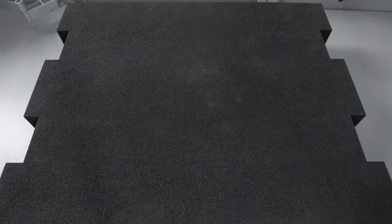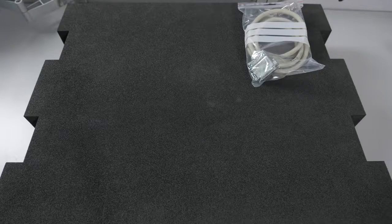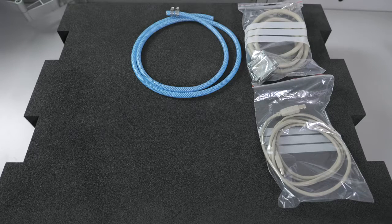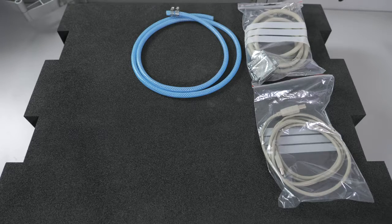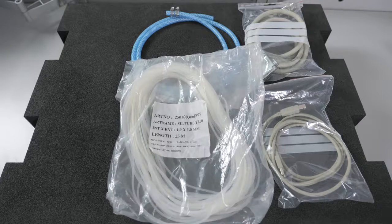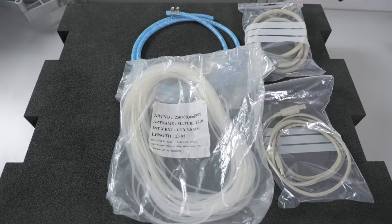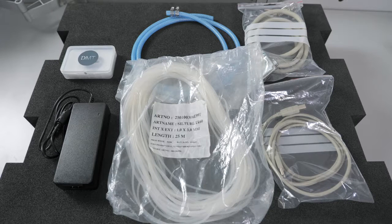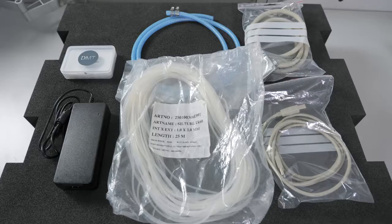Regarding the accessories that come with the system, you have a myograph cable, a USB cable, tubing and clamps that will allow you to connect your gas tank, a bag of silicon tubing to connect between the interface and the chamber, a power supply, and a USB stick containing the user manual and user guide.